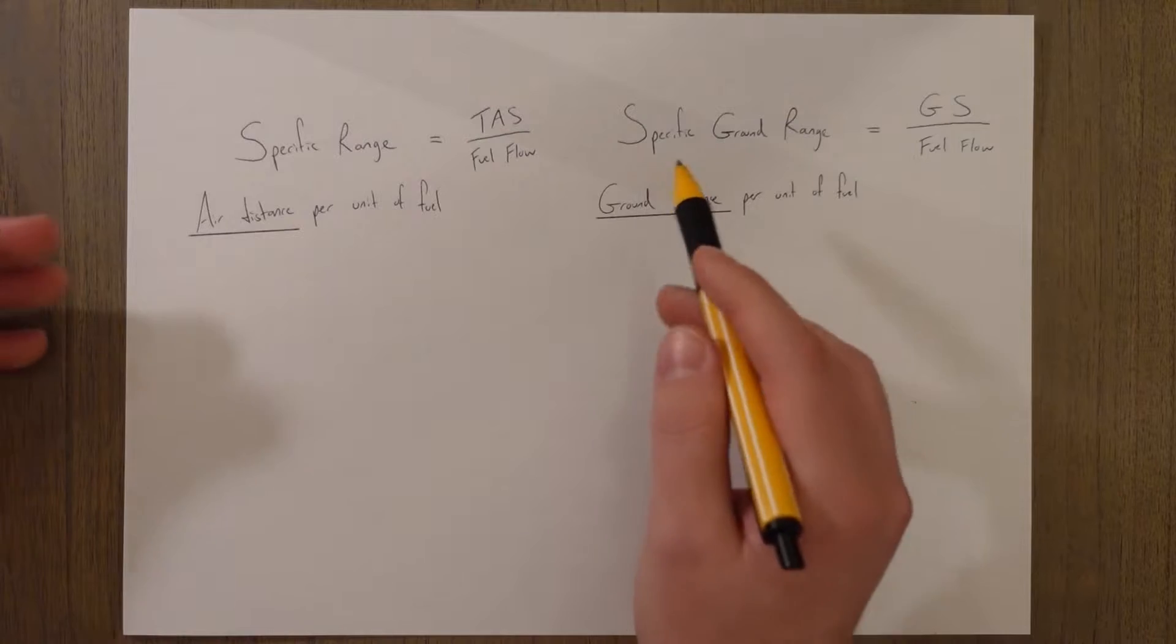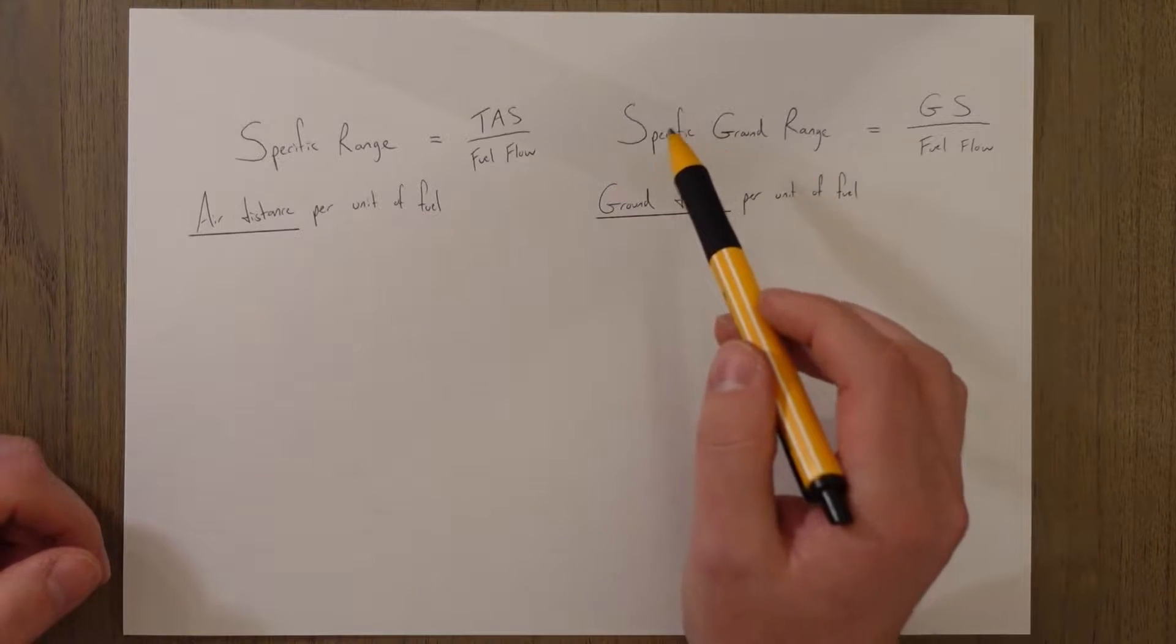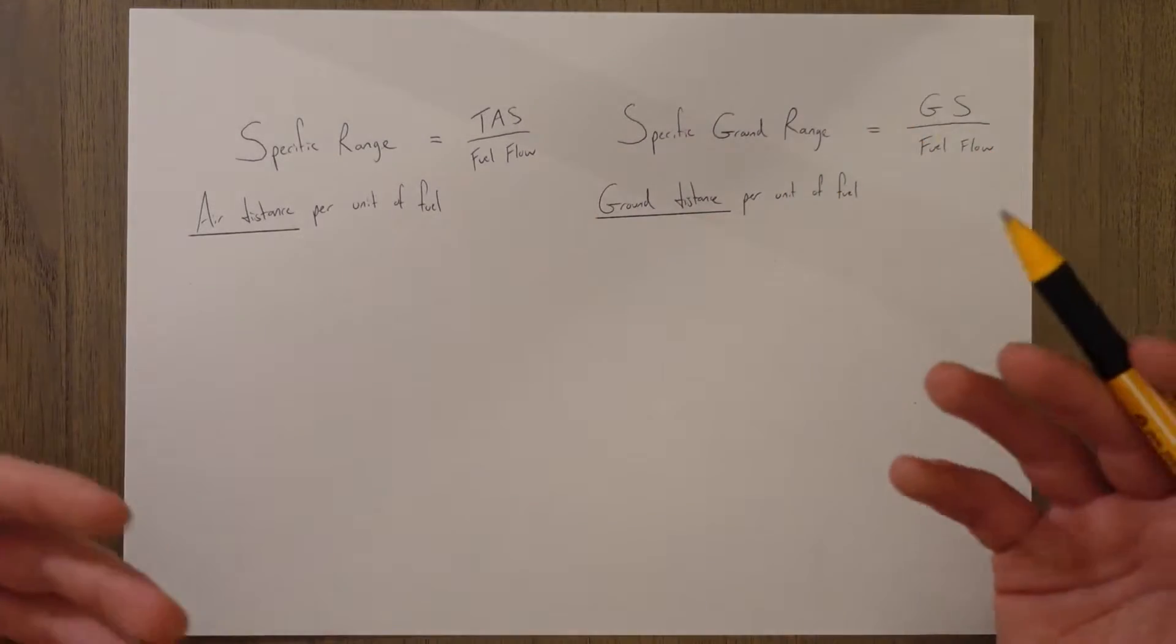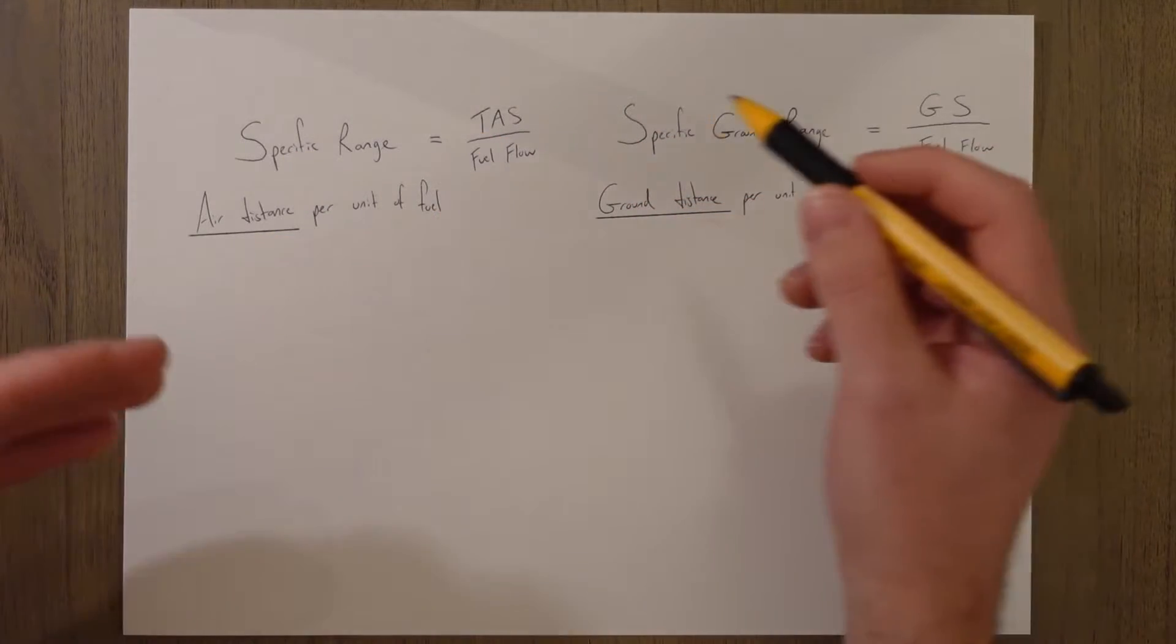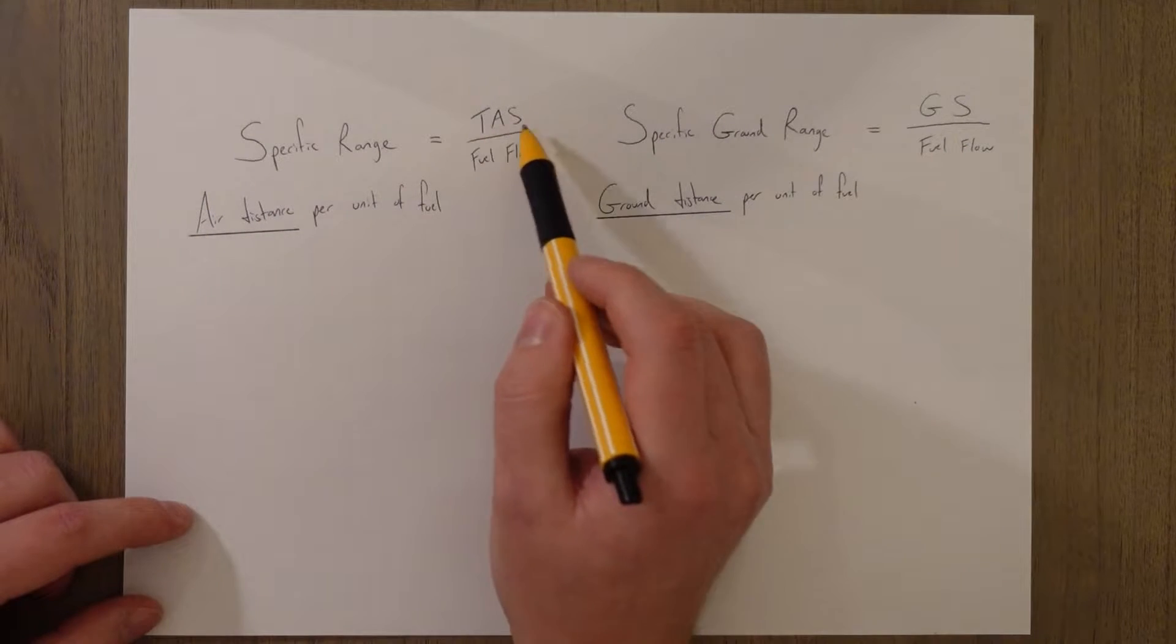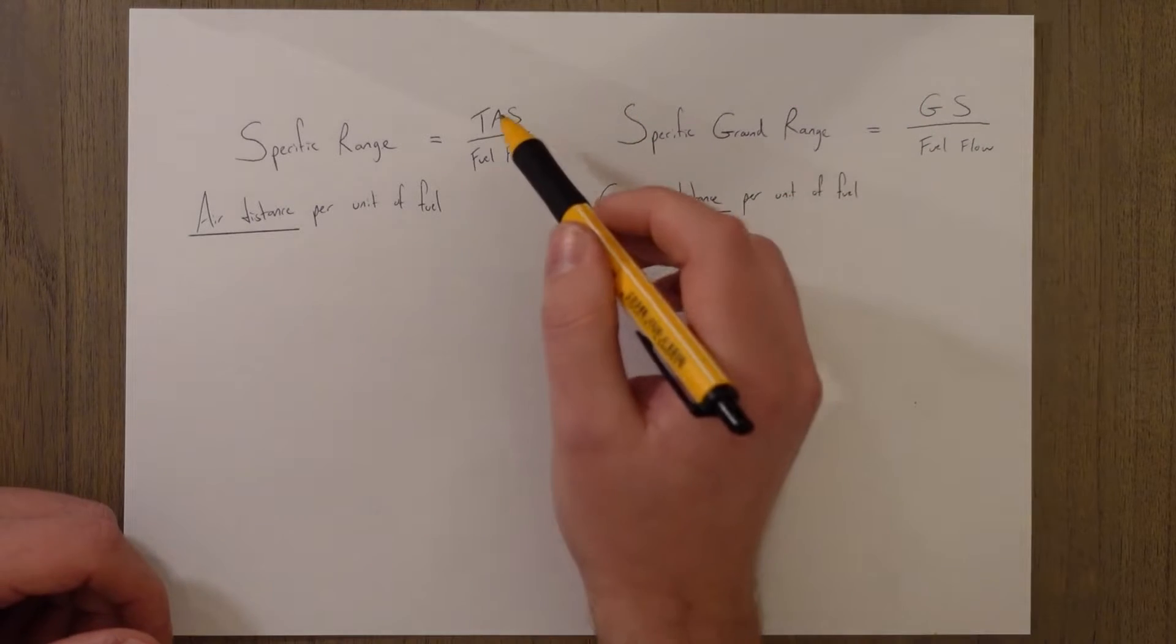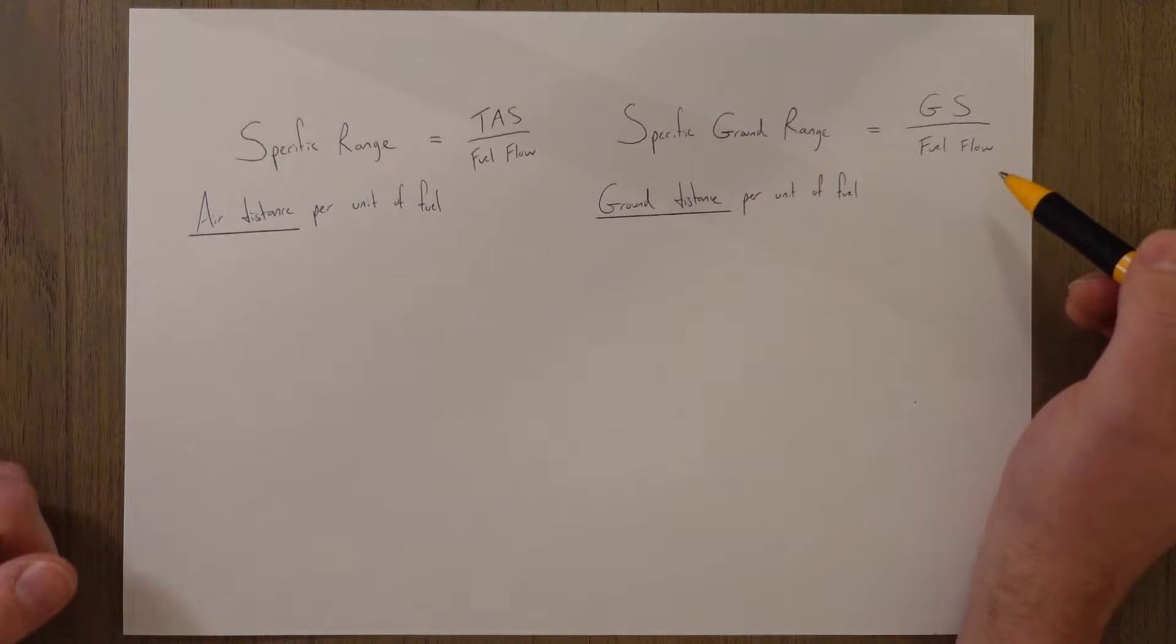If there's no wind, think of the train being stationary, then our specific range and our specific ground range will be the same. The units for specific range will be nautical miles per kilogram of fuel used, and if we divide by time, we can get two formulas: one for specific range and one for specific ground range. The one for specific range, the air distance, would be the true airspeed over fuel flow. And for ground range, we just need to factor in wind, and we can do that by using the ground speed, which is the TAS plus or minus any wind component, and then divide that by the fuel flow as well.